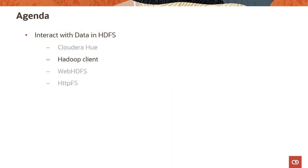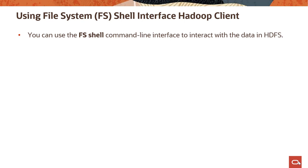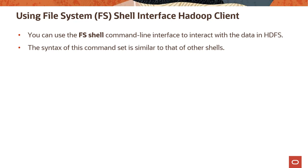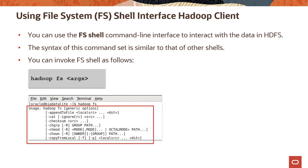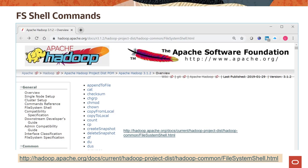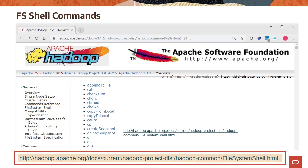Next, you will learn how to access data in HDFS using the Hadoop Client command line interface. HDFS provides a command line interface named the file system, or FS shell, that enables you to interact with the data stored in HDFS. The syntax of this command set is similar to that of other shells. You can invoke FS shell by using the hadoop fs command followed by some arguments. You must add the hadoop fs prefix to all commands. If you enter the hadoop fs command by itself, the complete list of available arguments or commands is displayed. For a complete list of FS shell commands, access the file system shell site using the URL shown at the bottom of the screen.